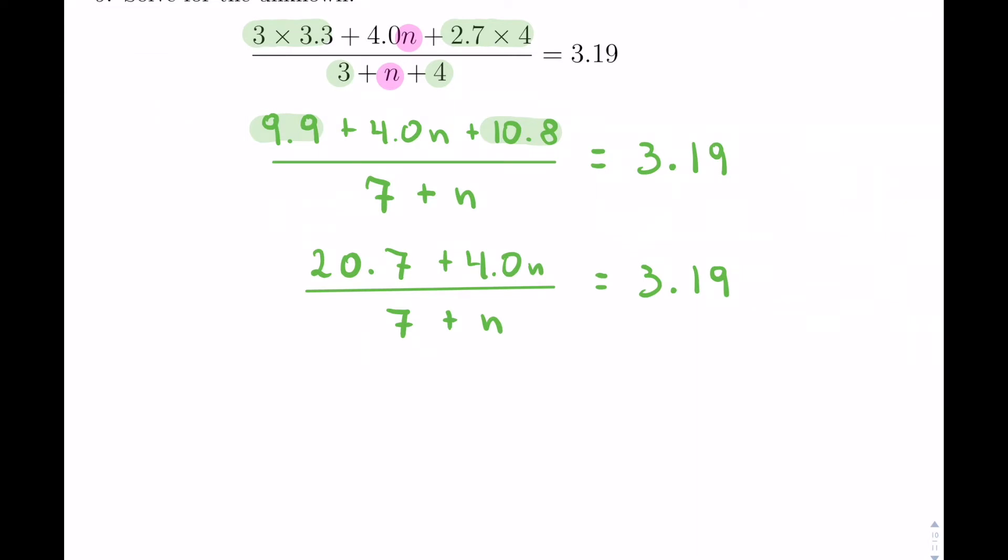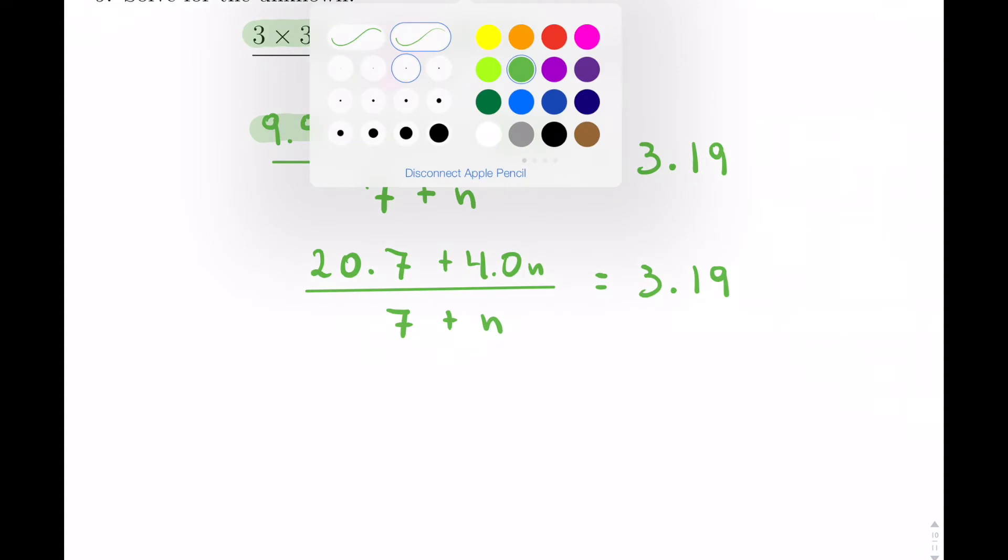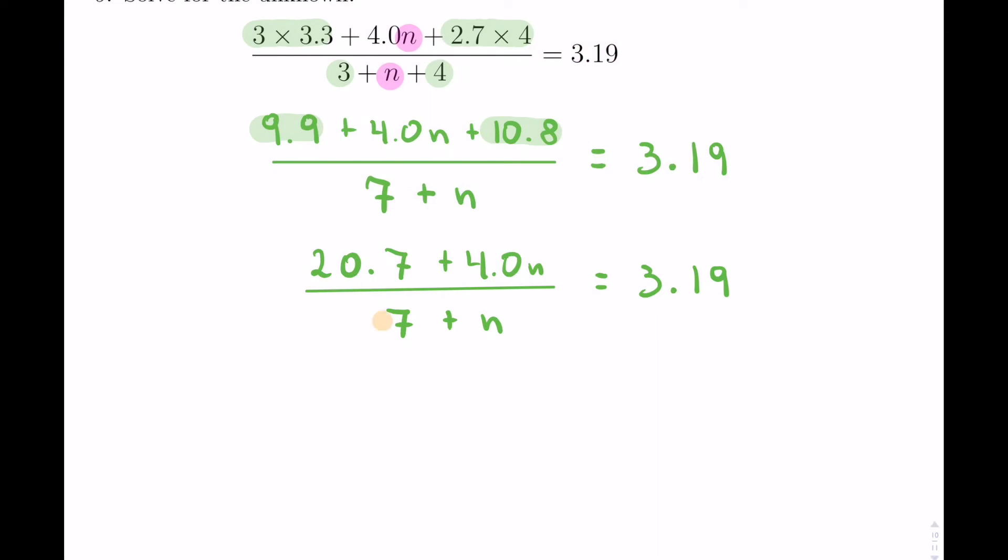Now, unlike some of the other examples, I have an unknown at the top and at the bottom. You have to be comfortable knowing that you can get rid of the denominator 7 plus n by simply multiplying both sides by 7 plus n.